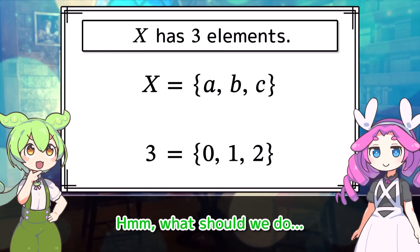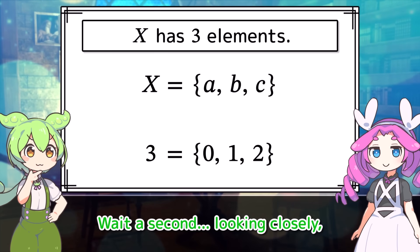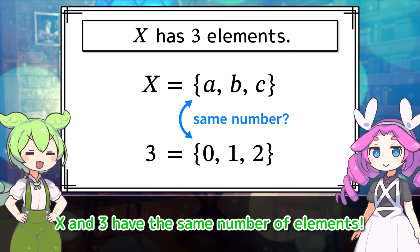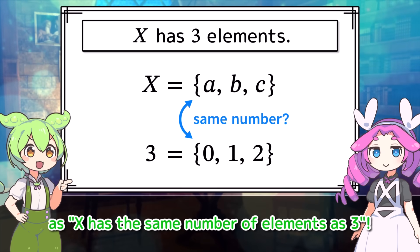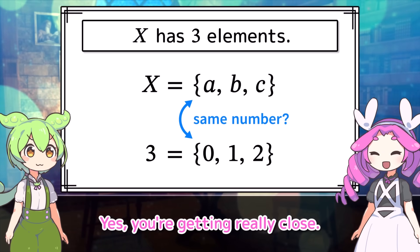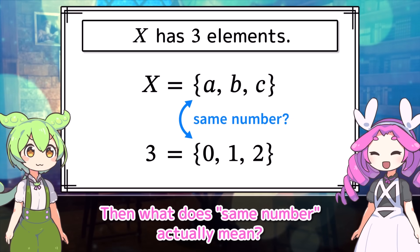So how can we use this three to express that X has three elements? Hmm, what should we do? Wait a second. Looking closely, X and three have the same number of elements. So saying X has three elements can be restated as X has the same number of elements as three. Yes, you're getting really close.